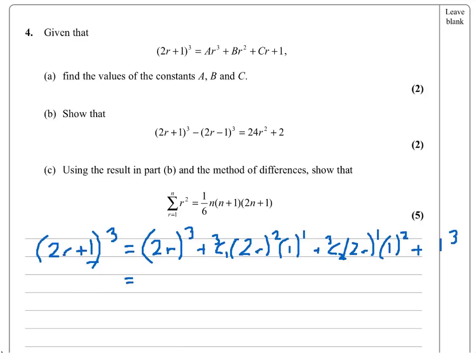All I need to do now is put these things into a calculator. Here I clearly have 8r³ because the 2 is cubed as well. Here 3 choose 1 is 3 times 2², so that gives me 12r². Here 3 choose 2 is also 3 times 2, so that's 6r. And then at the end, that's just plus 1.